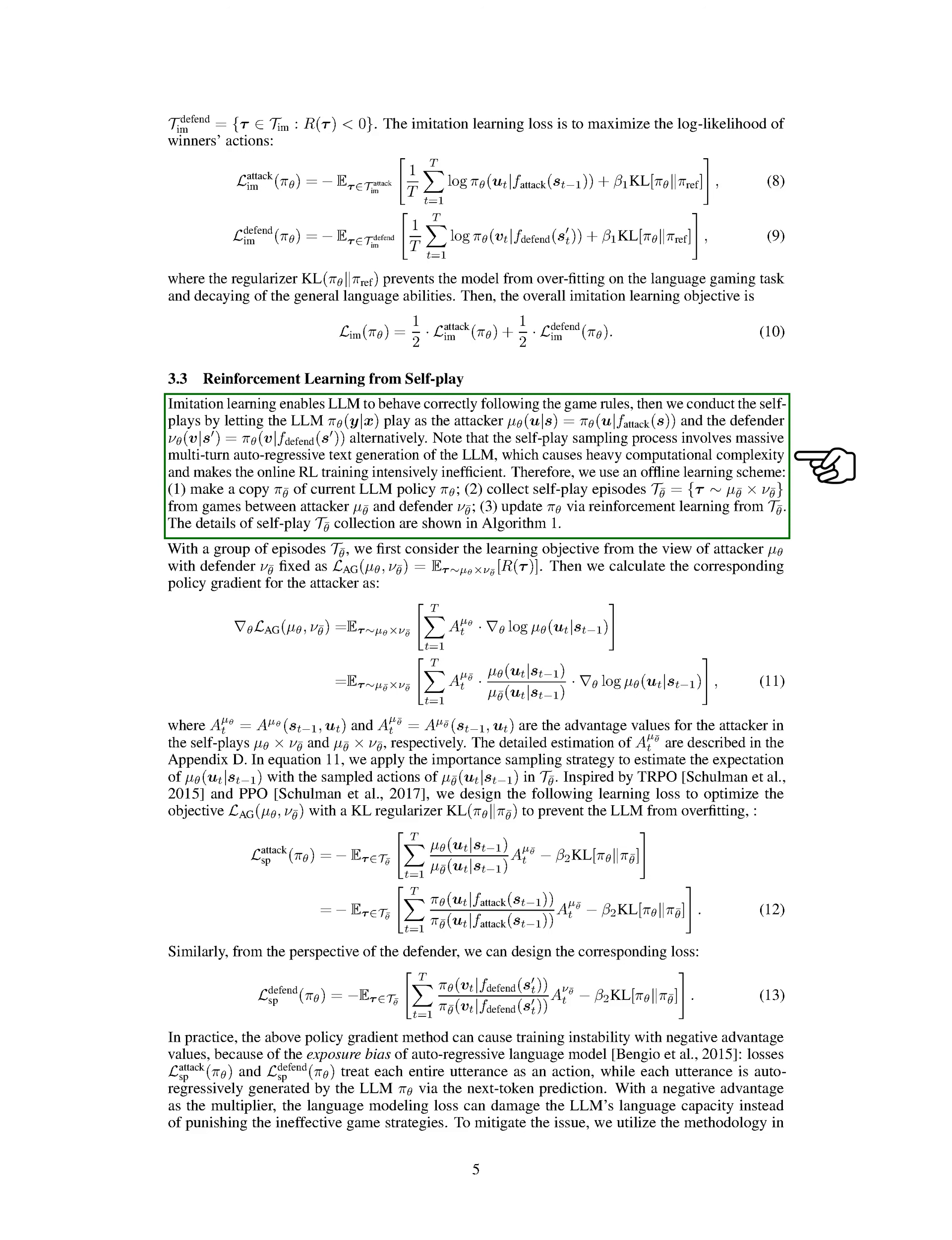However, training instability can occur due to negative advantage values and exposure bias. To address this, we select episodes with positive rewards for the attacker and negative rewards for the defender for training. This helps improve the effectiveness of the training process and ensures that the language model learns to play the game better.